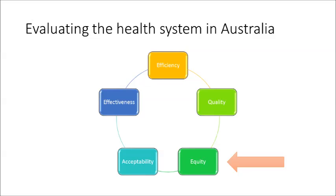I showed you this diagram in the introductory video for this module, and here we are going to briefly look at it again. Equity, quality, efficiency, effectiveness, and acceptability are the means by which the health system can be evaluated. We are going to start now by exploring equity.